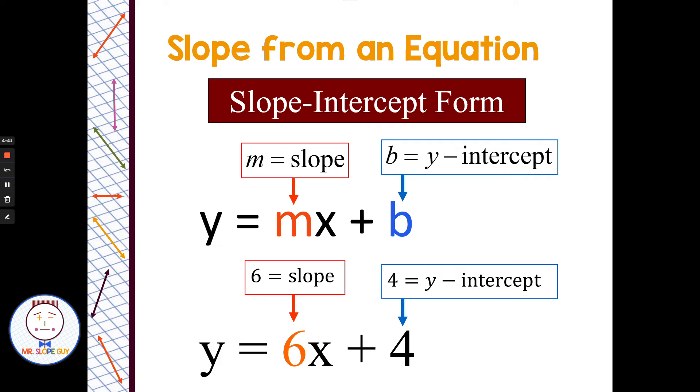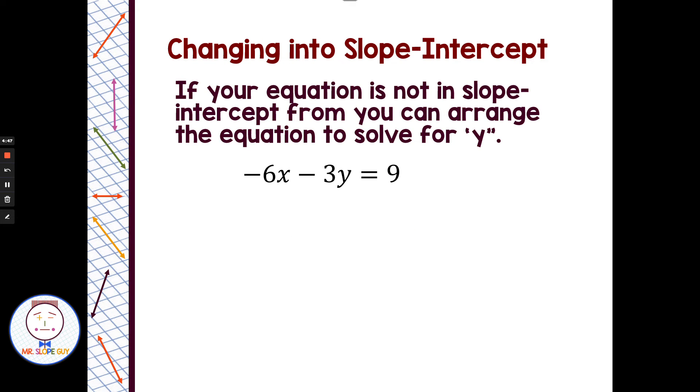But let's say they gave us an equation that's not in slope intercept form, then I can put it into slope intercept form. If your equation is not in slope intercept form, you can arrange the equation to solve for y. We have negative 6x minus 3y equals 9. To put this into slope intercept form, I could add 6x to each side. Then divide all three parts by negative 3.